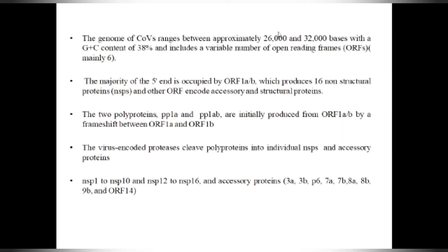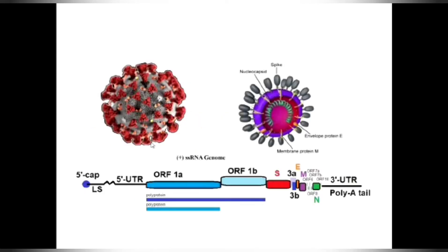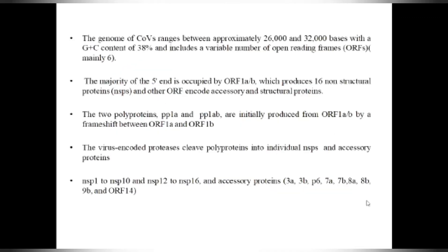The genome includes a variable number of open reading frames — mainly 6 frames. The majority of the 5' end is occupied by open reading frames 1A and 1B, which produce 16 non-structural proteins. Another open reading frame encodes accessory and structural proteins. The genetic structure has a 5' end with ORF1A and 1B, followed by structural protein, surface protein, envelope protein, membrane protein, nucleocapsid, and a poly-A tail.